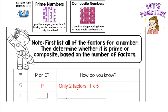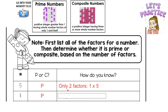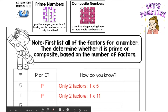Now let's move on to 11. Is it prime or composite? They shorten it to P and C — don't be confused. If you want to write out prime or composite to be clear, that's completely fine. It's prime. You know that because it only has two factors — one and itself. One times 11 is the only thing with whole numbers I can multiply to get there.